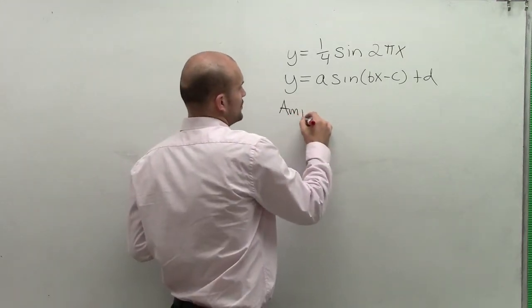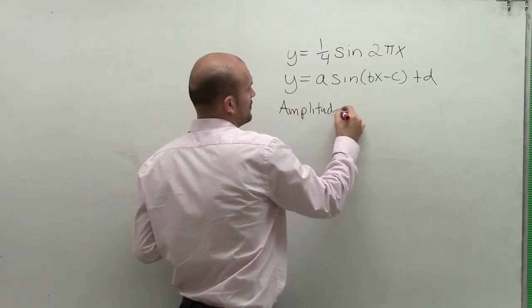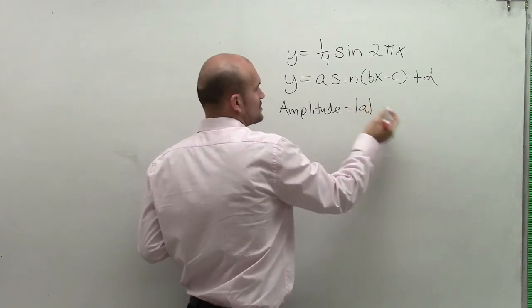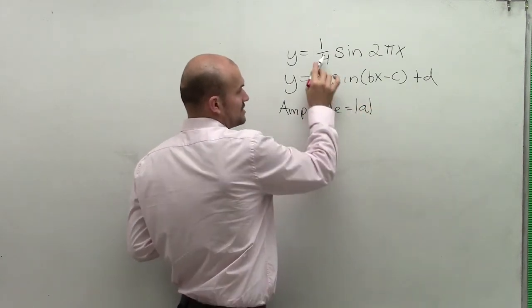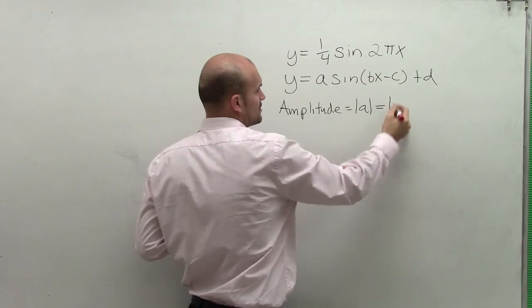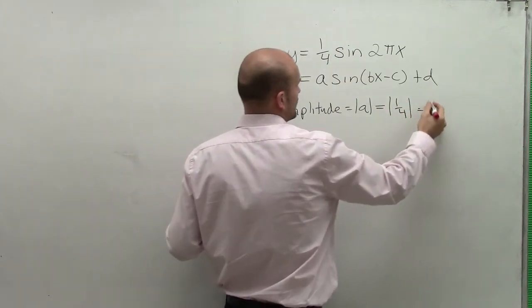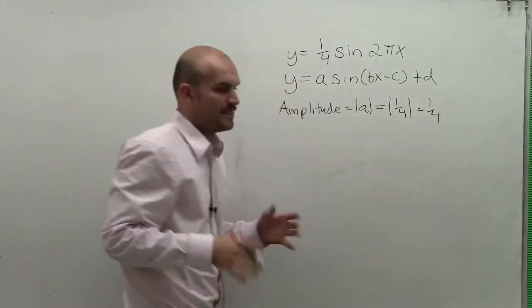Our amplitude ended up being the absolute value of a. So in this case, we look at our a, which in our example is 1 fourth. So the absolute value of 1 fourth is just equal to 1 fourth.